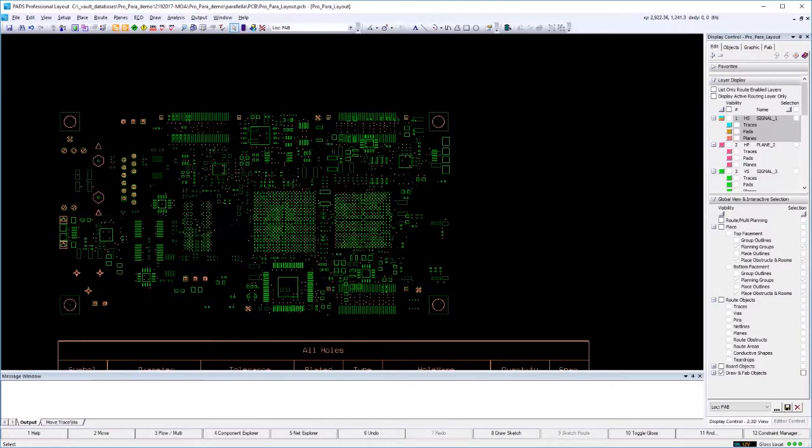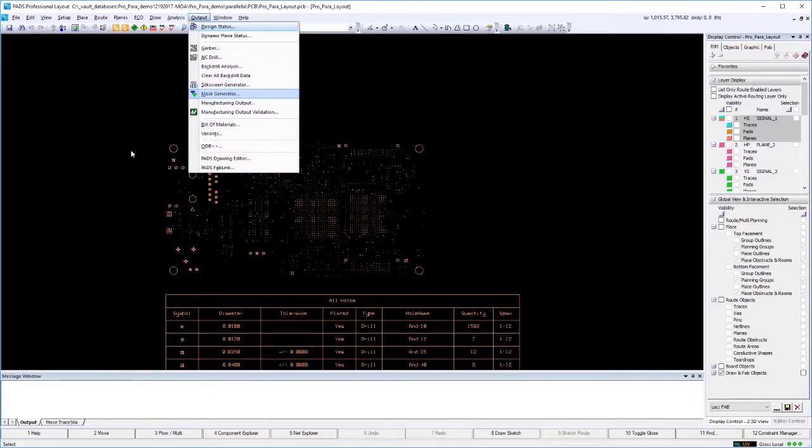PADS Professional comes with a very powerful mask generator. In this example, we'll generate a solder paste. The mask generator creates custom masks from the design elements for design verification, plotting, area calculations, and documentation. Go to Output, mask generator. We'll load the solder paste local scheme.